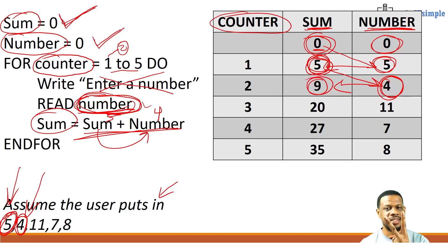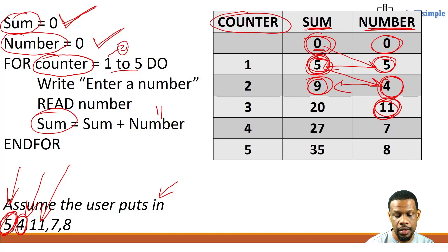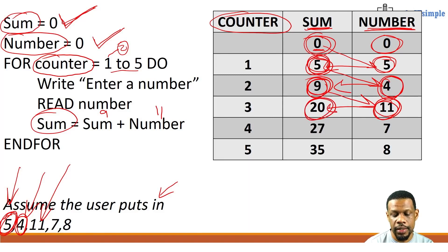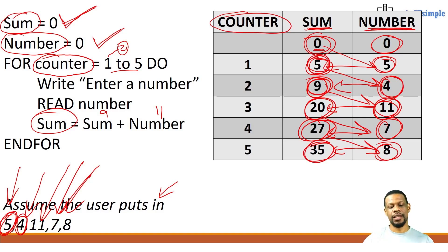The third loop iteration: number is 11. Nine plus 11 gives 20 — sum updates to 20. The fourth loop: number is seven. 20 plus seven gives 27 — sum updates to 27. The fifth and final loop: number is eight. 27 plus eight gives 35. We have successfully navigated the loop and traced what happened every single time it ran.